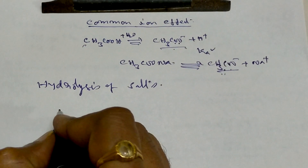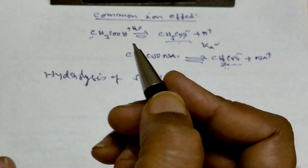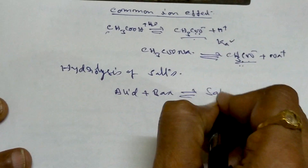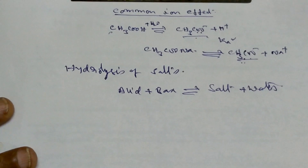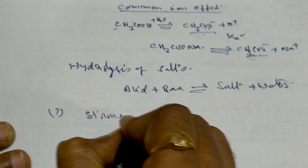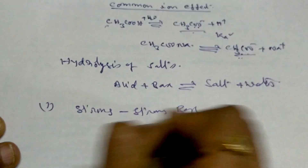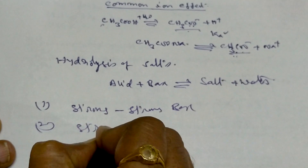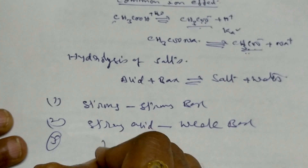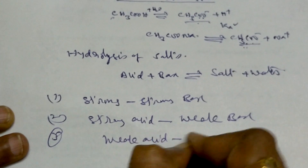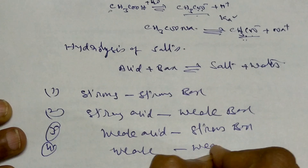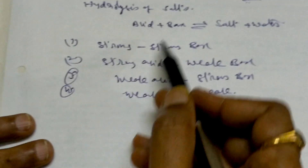How are salts formed? Salts are formed because of the addition of acid plus base, giving salt and water. How many types of acids and bases are there? There are four types: strong acid with strong base, strong acid with weak base, weak acid with strong base, and weak acid with weak base. So there are four types of salt formation.